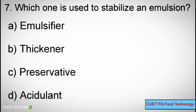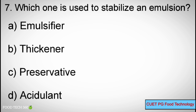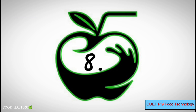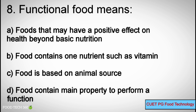Q7: Which one is used to stabilize an emulsion? A. Emulsifier, B. Thickener, C. Preservative, D. Acetylene. Correct answer: A. Emulsifier.